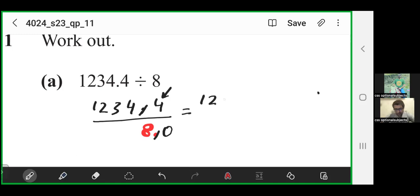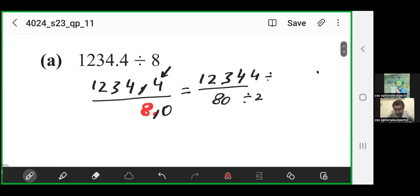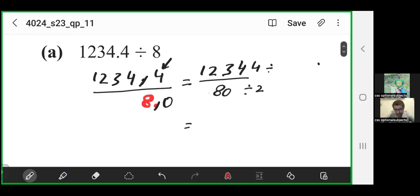After cancellation you can write 12344 over 80. Divide the numerator and denominator by 2. When you divide numerator by 2: 6 times 12, 1 times 2, 7 times 14, 2 times 4. You get 6172 over 40.